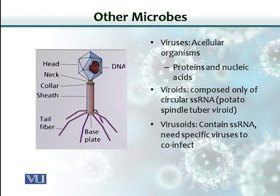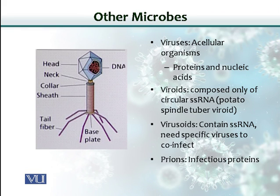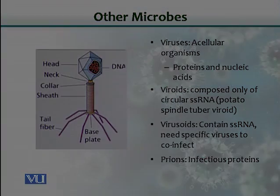Viroids need another virus to cause infection. The last entity is called prions. Interestingly, these are proteins in nature, but they are infectious and can cause disease.